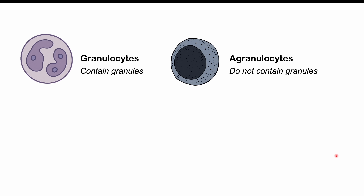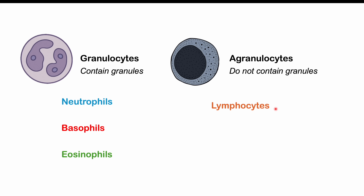Because anaplasma bacteria reside in granulocytes rather than agranulocytes, it's worth clarifying what granulocytes are. Granulocytes are immune cells or white blood cells that contain granules, and include neutrophils, basophils, and eosinophils. Agranulocytes do not contain granules and include lymphocytes and monocytes. Monocytes can become macrophages when they enter tissue. Anaplasma specifically affects granulocytes.